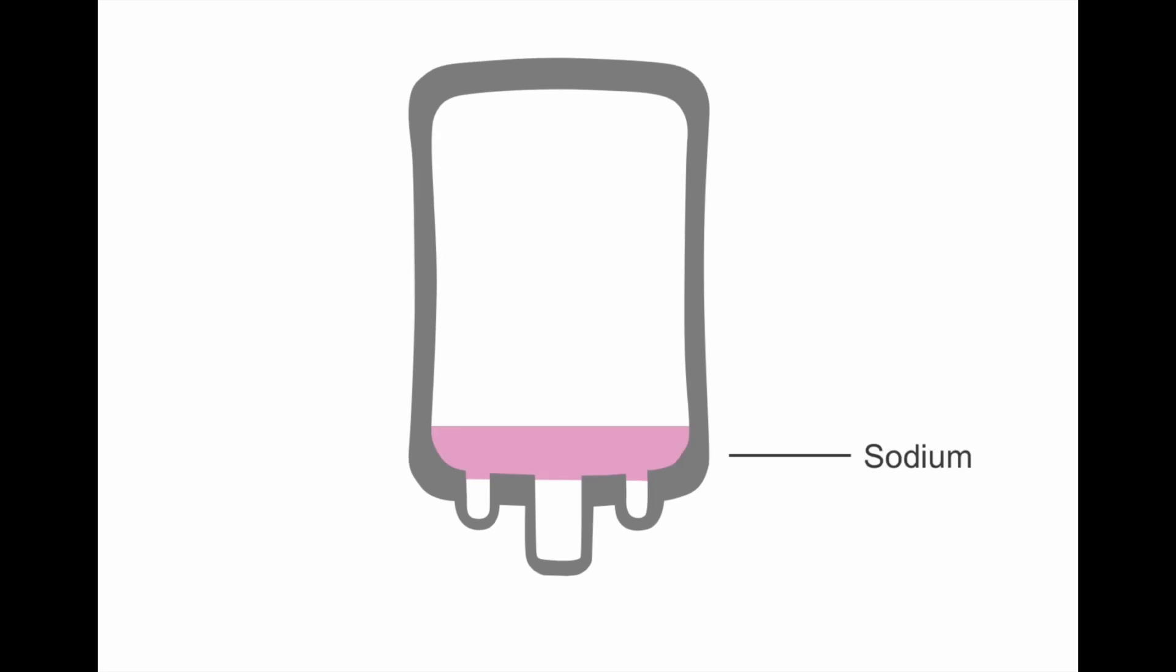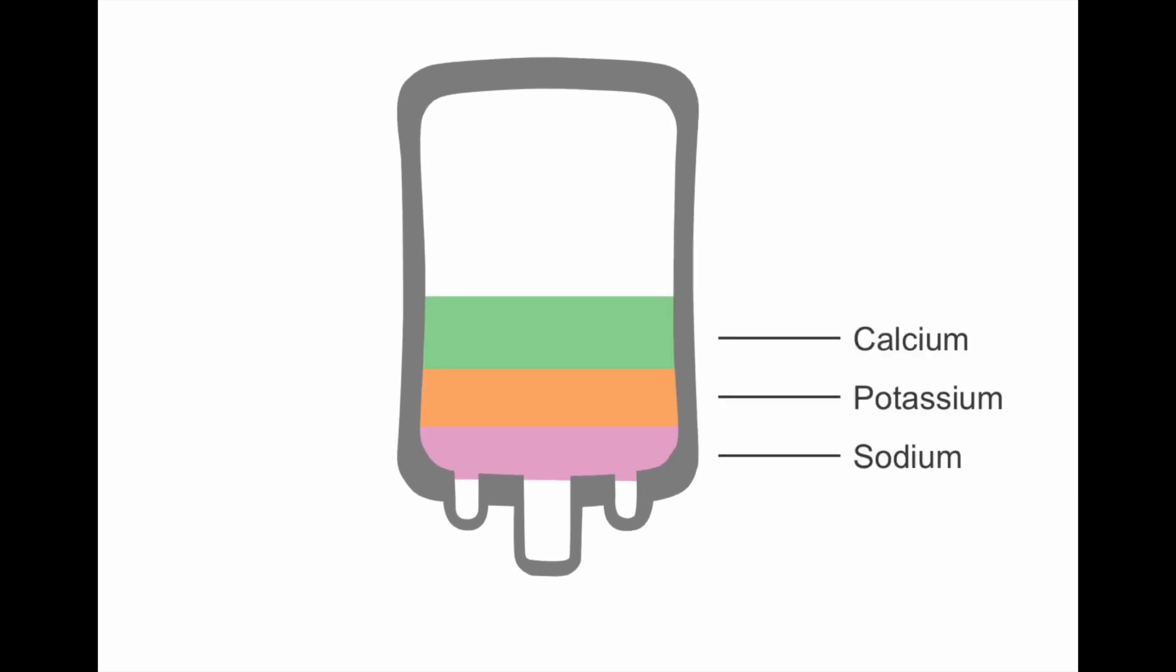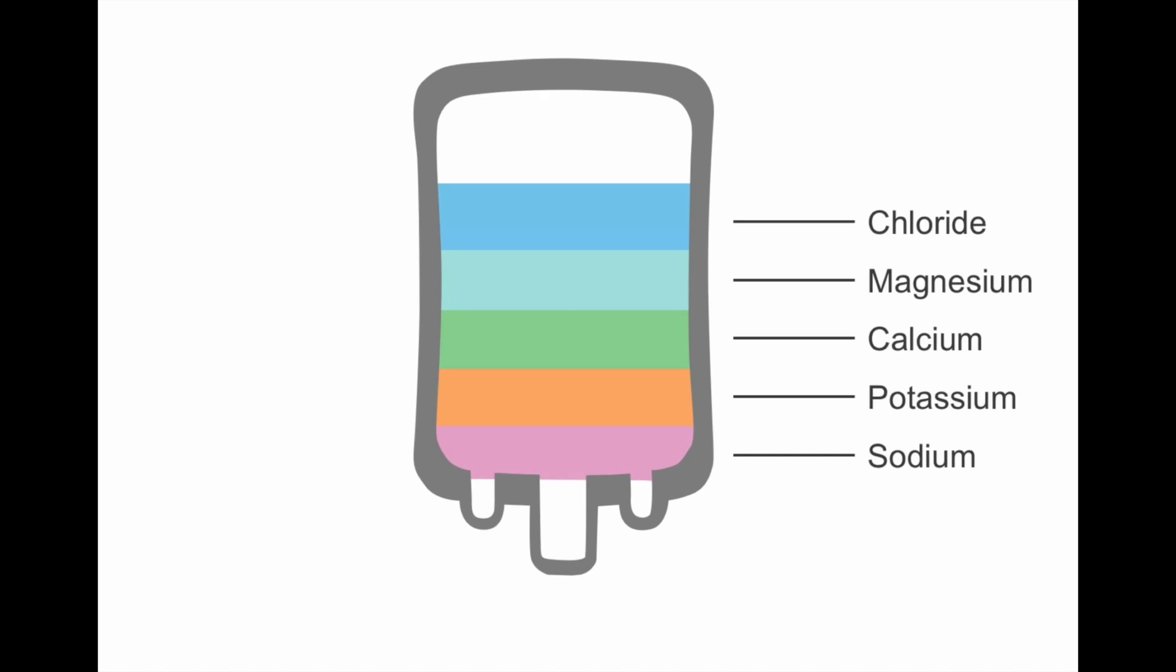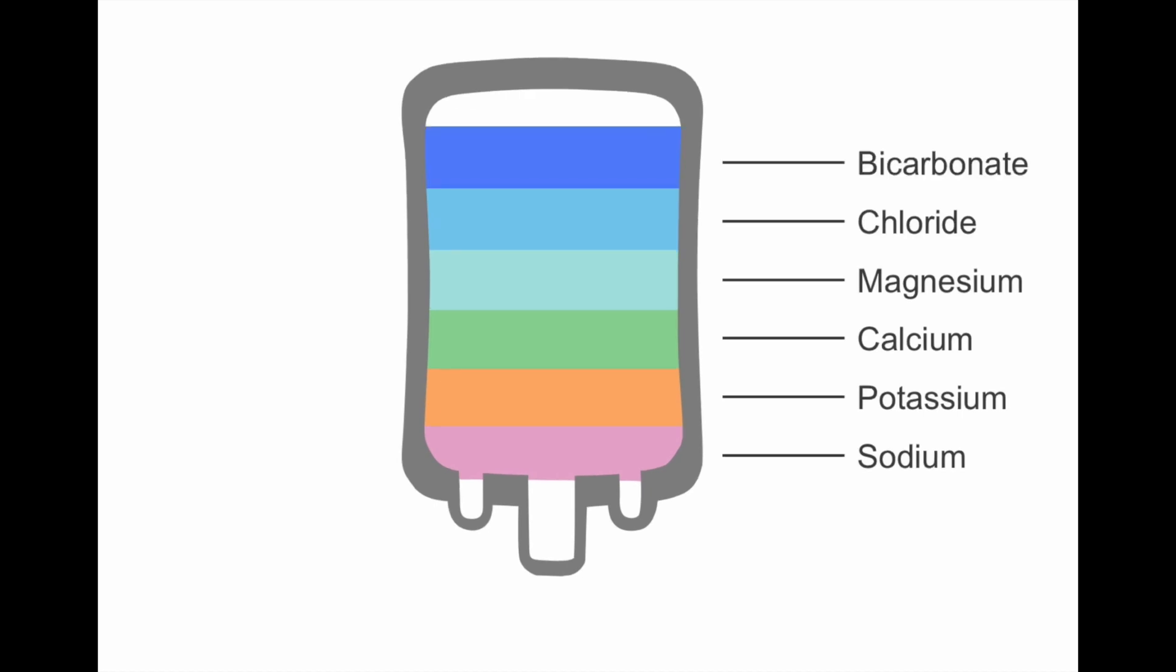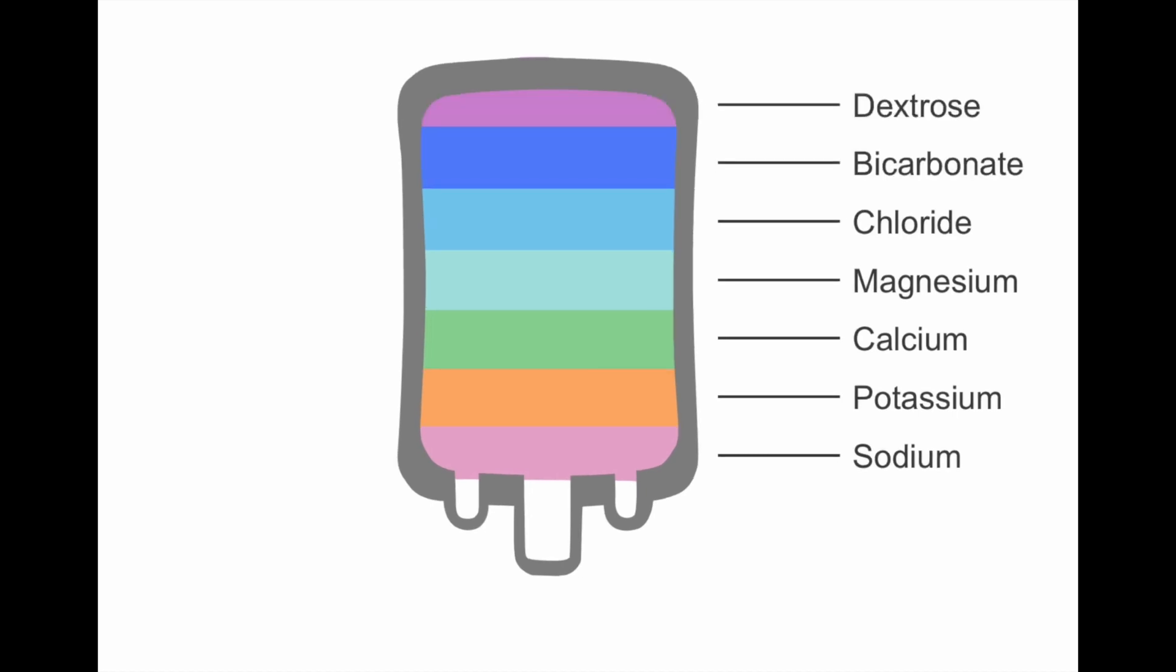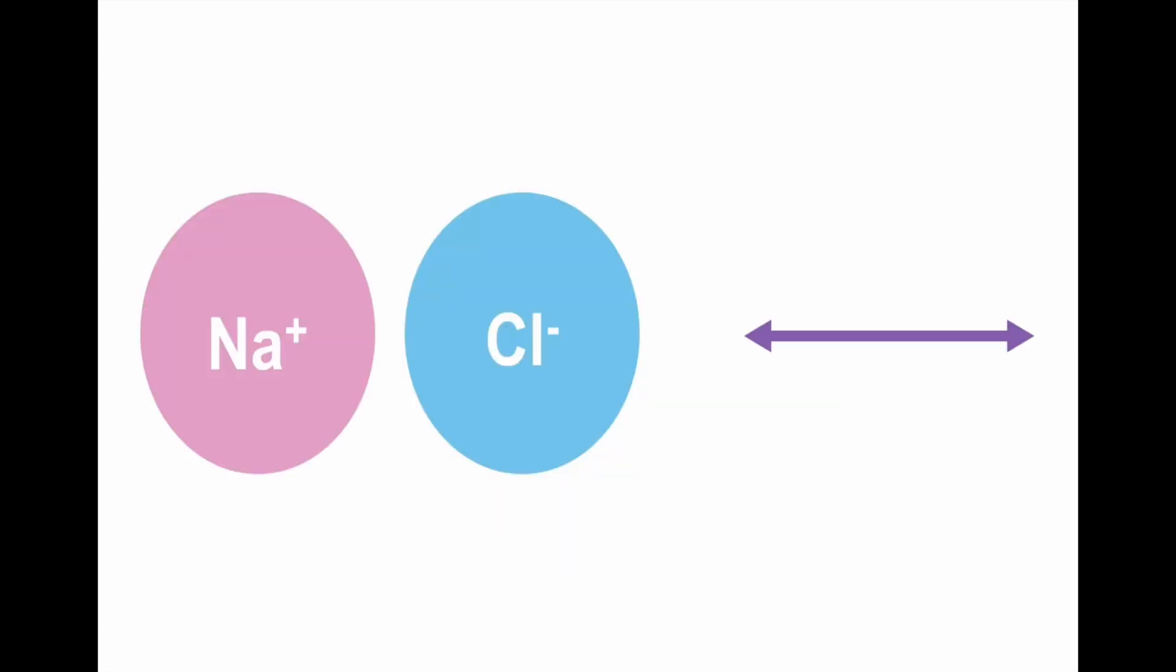The constituents of this are generally sodium, potassium, calcium, magnesium, chloride, bicarbonate and dextrose. Sodium, potassium and chloride concentration is generally in similar range to that of our plasma, whereas calcium and magnesium levels differ. The sodium and chloride are basically similar to that of our blood levels.